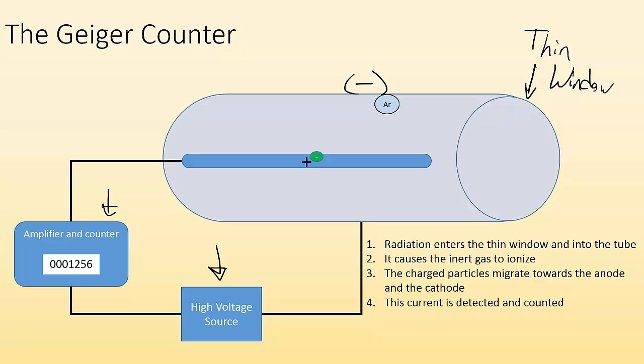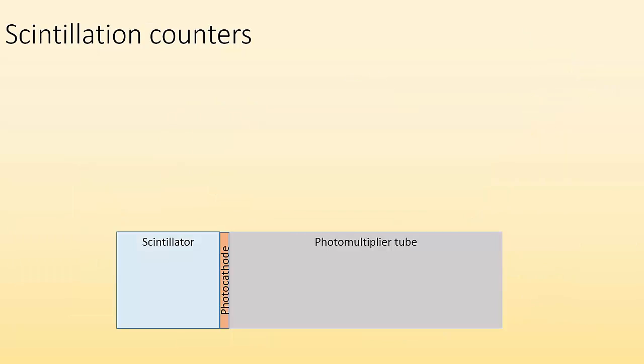So the current is detected by the amplifier and counter, and it's counted. This can also be detected by a speaker, giving a clicking sound. So if you know Geiger counters at all, first thing that comes to mind is probably hearing that click, click, click from the radioactive sample. You can hook it up to a speaker and make a sound that way. And then the counter will count it, so you can count how often you're getting that radiation into the tube.